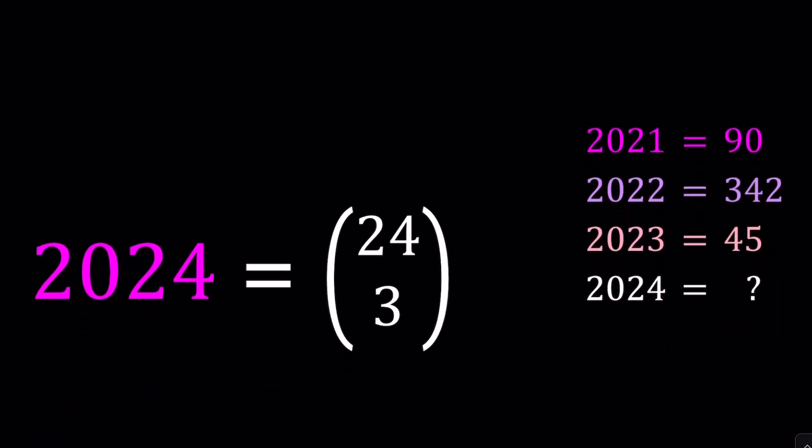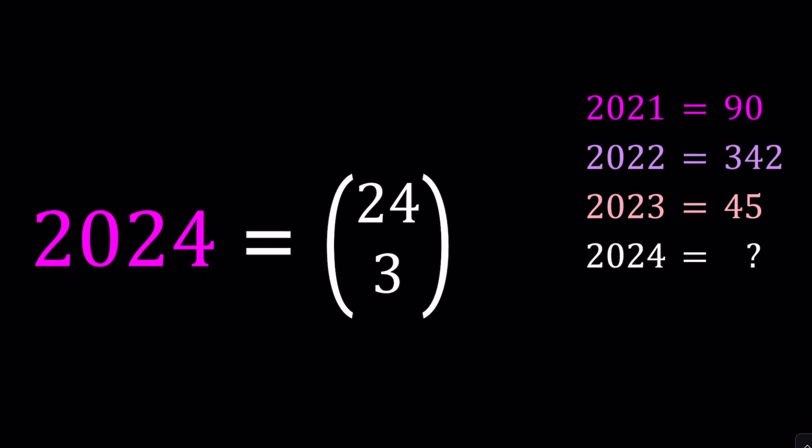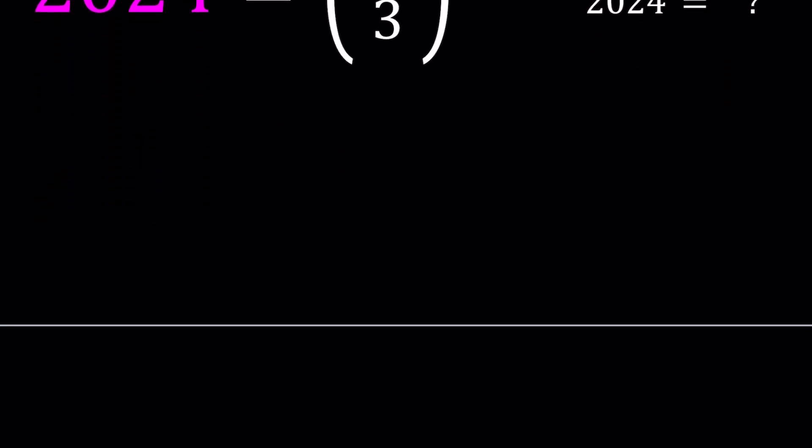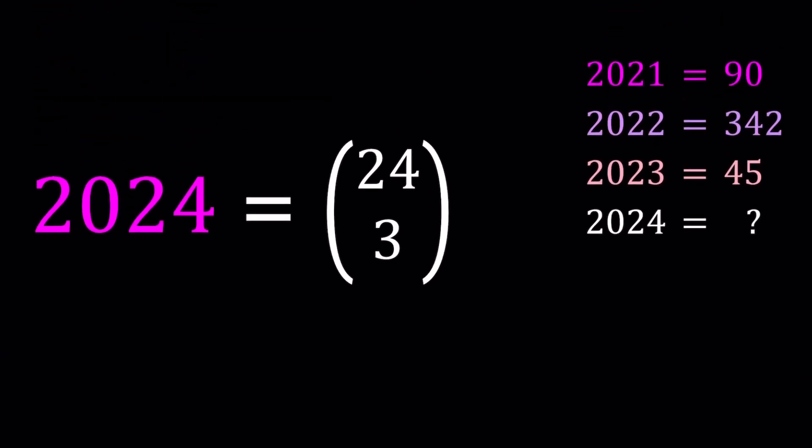Anyways, so these are some of the facts. And last but not least, 2024, from a combinatorial standpoint, can also be written as 24 choose 3. Great. So a lot of interesting facts about this number, and you can probably find more on the internet if you just search for interesting facts about 2024. And if you do know some interesting facts, please share with us down below in the comments section. Great. Let's go ahead and take a look at our puzzle.